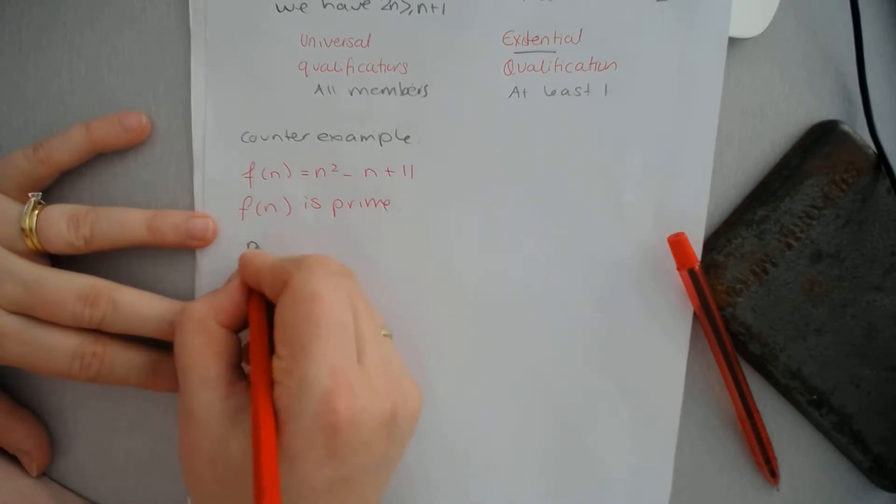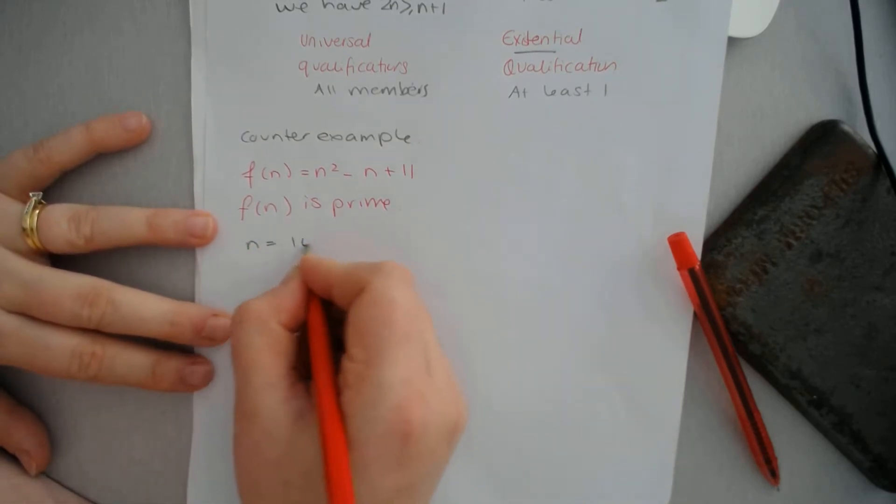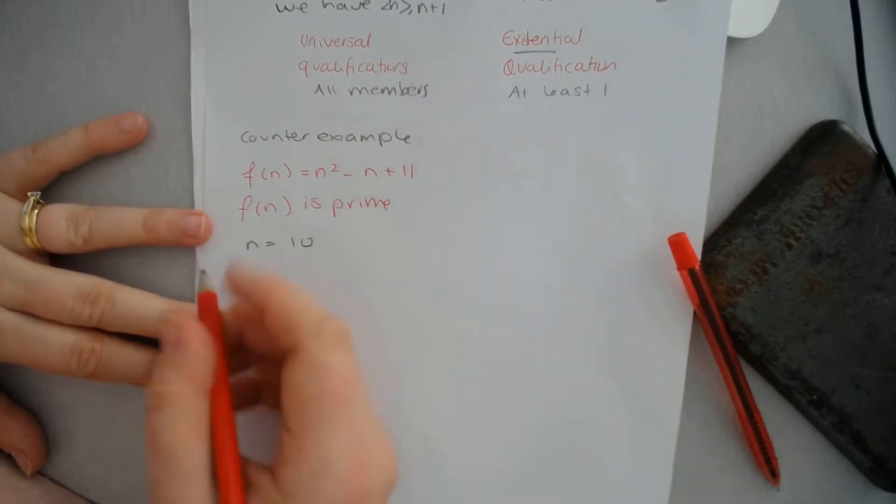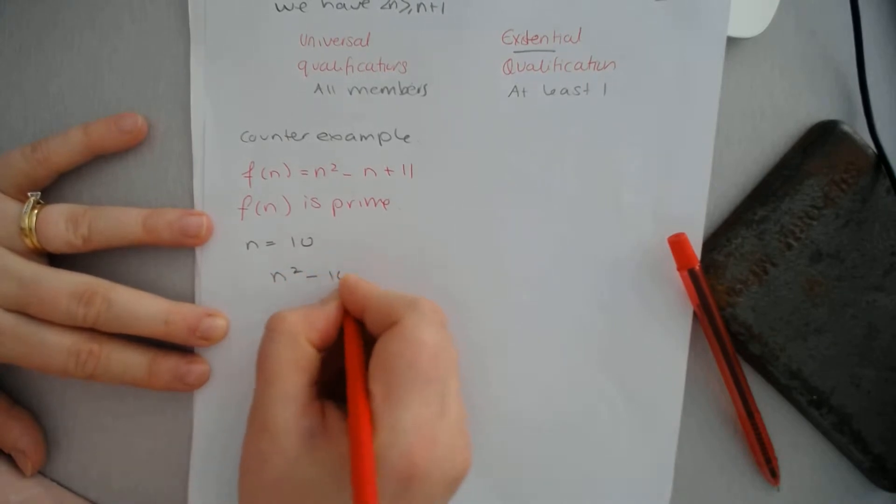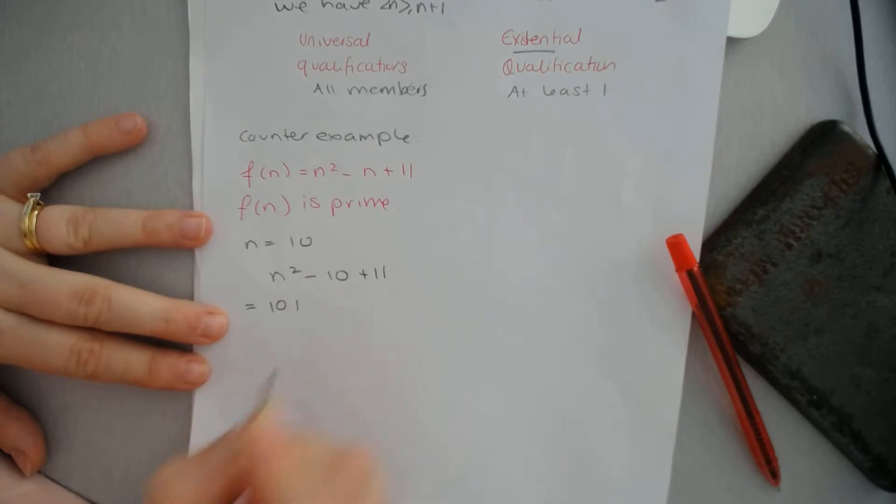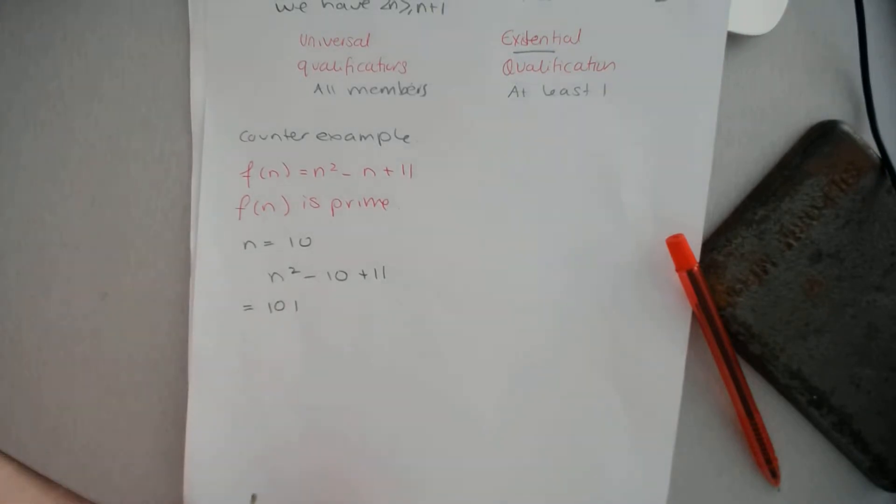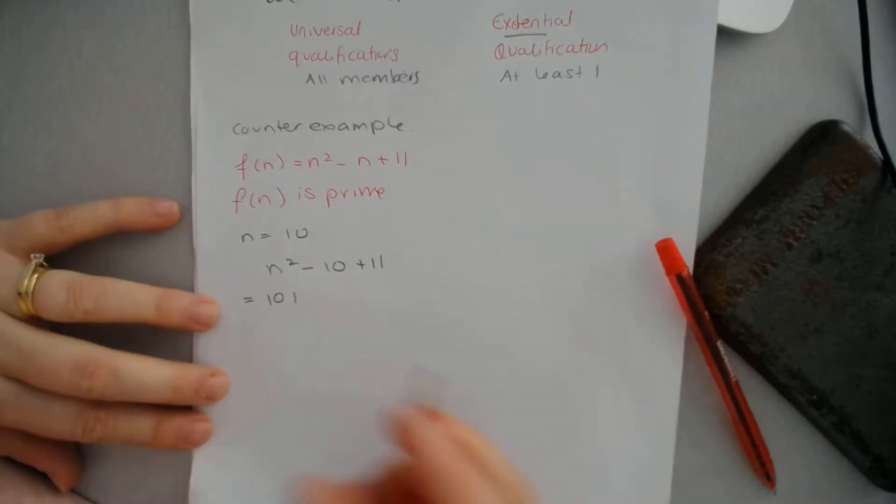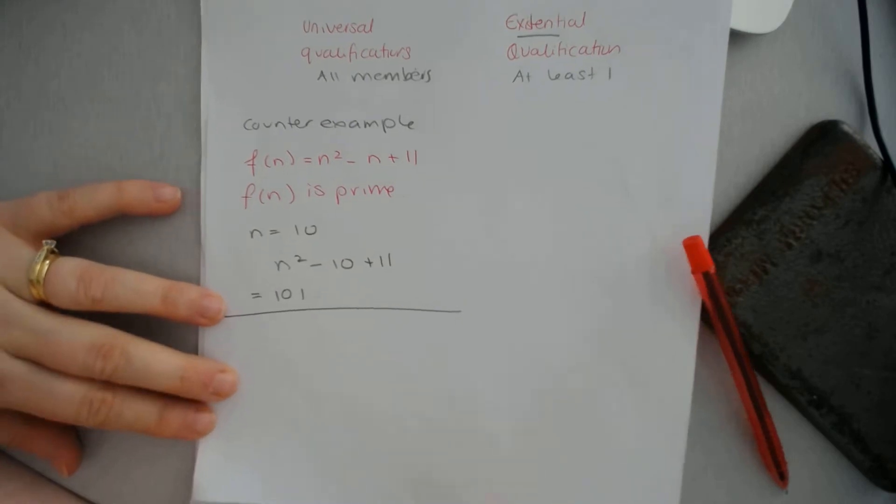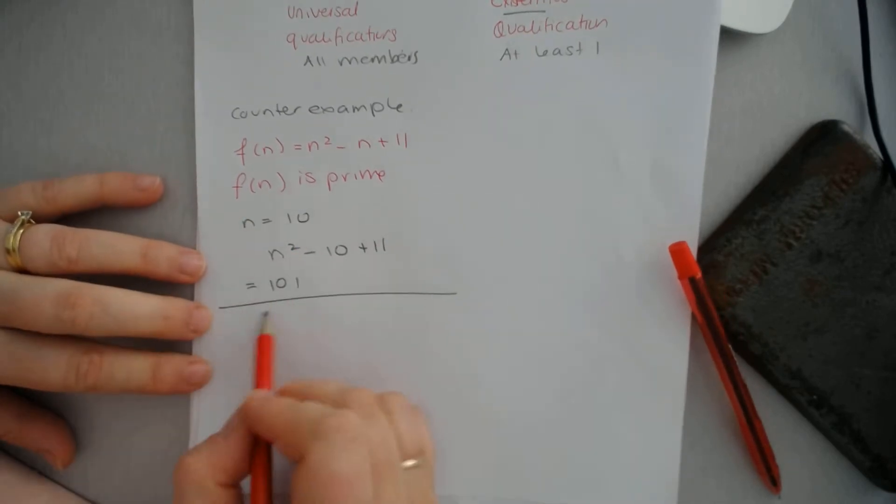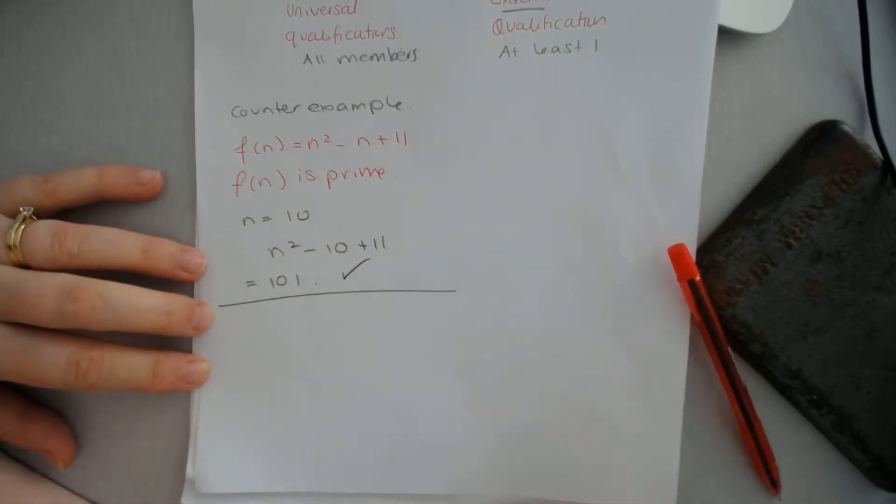To do that, we can do trial and error. If n is 10, for example, we can say 10 squared minus 10 plus 11, well that equals 101. And you can go through and do this. You just need to prove one. So the one that is most obvious is 11. 101 is prime, so we're going to guess it's prime.